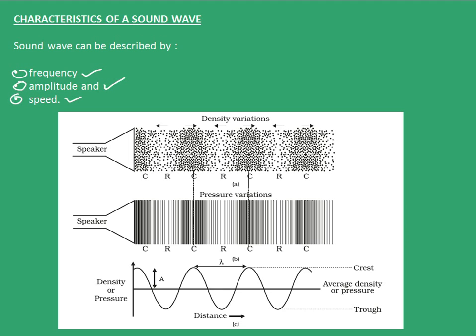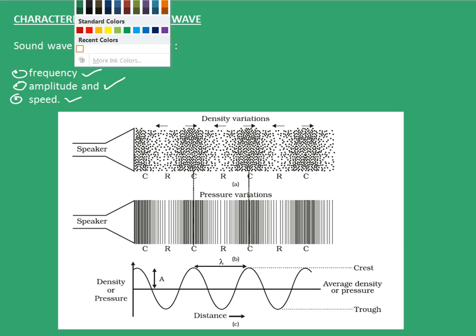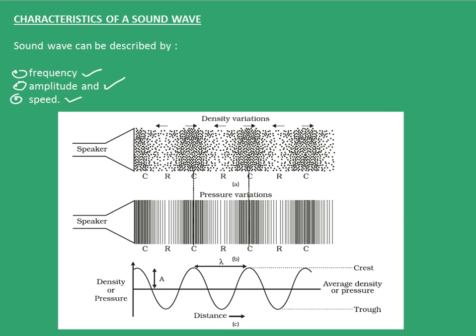Sound wave propagates in a medium through alternate regions of compression and rarefaction. These are nothing but density variations in the particles that are present in the medium. In the first picture here we can see that the particles near the speaker are in a compression region. The next region is the rarefaction region. Alternatively, these compression and rarefaction regions propagate through the medium till it reaches the listener.